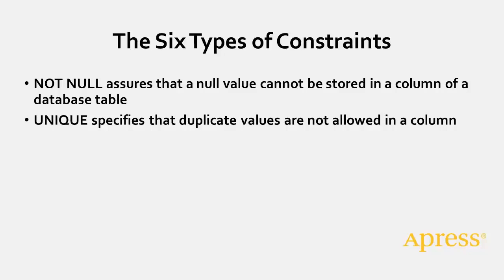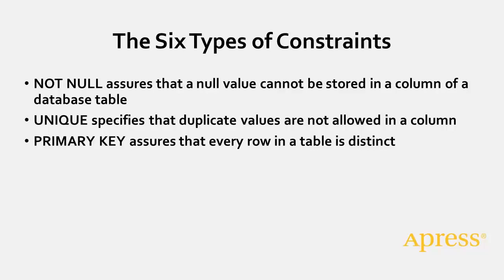The PRIMARY KEY constraint assures that every row in a table is distinct from all other rows. This assurance comes from the fact that the PRIMARY KEY column must contain a value and that value must be unique within the column.